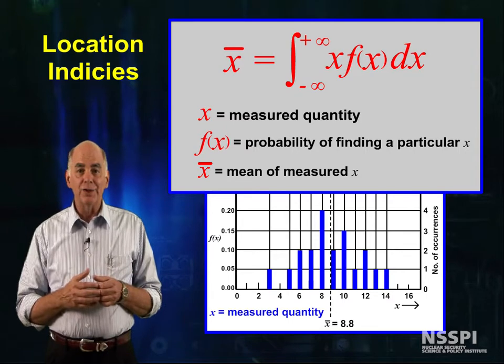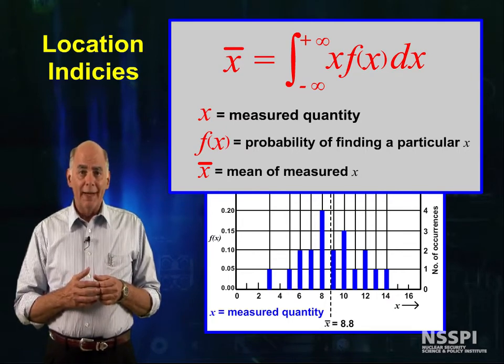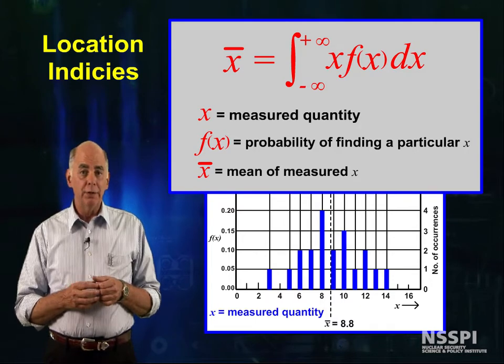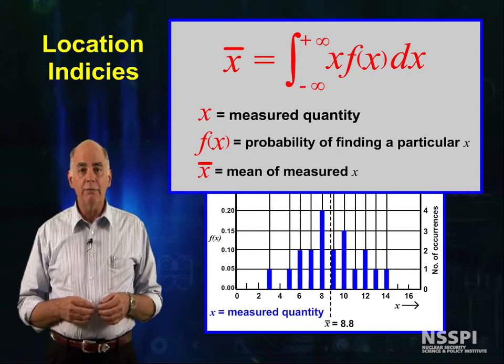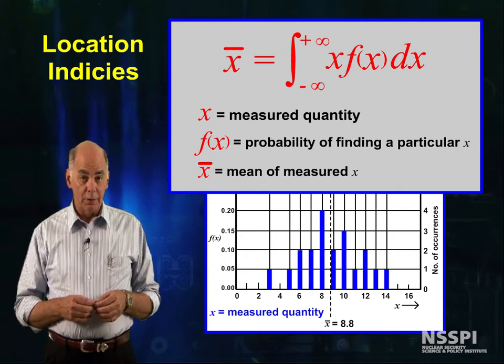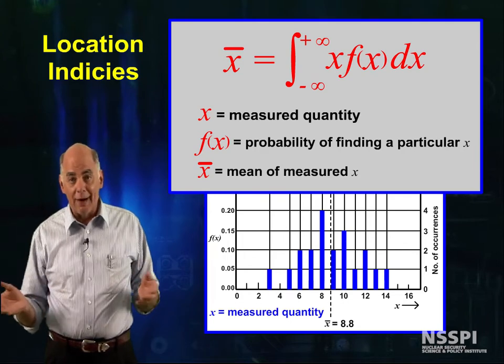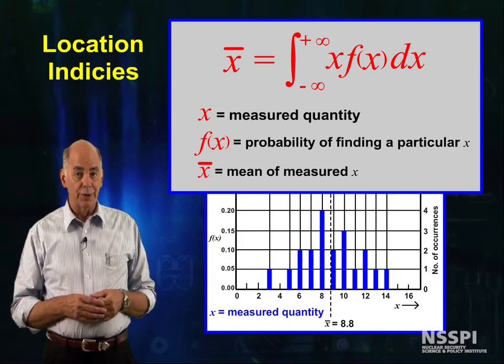You probably haven't seen average defined this way, but f(x) is the probability of finding a particular value of x, where these x's are real numbers. X bar is the symbol we will use for the mean, or the average, for the rest of this lecture.